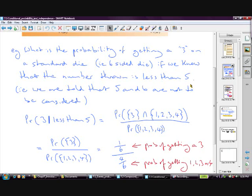So this changes the chances doesn't it. If we're told okay what's probably getting three but we know it's less than five. So in other words less than five is not a five or a six.